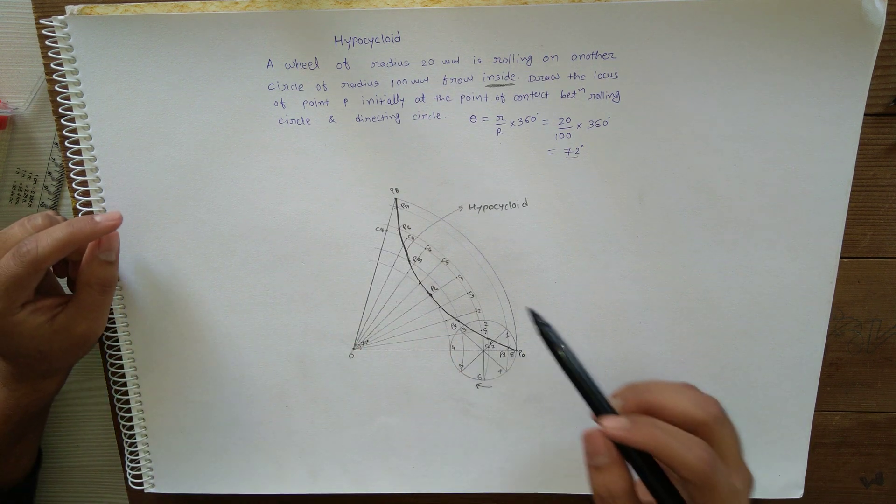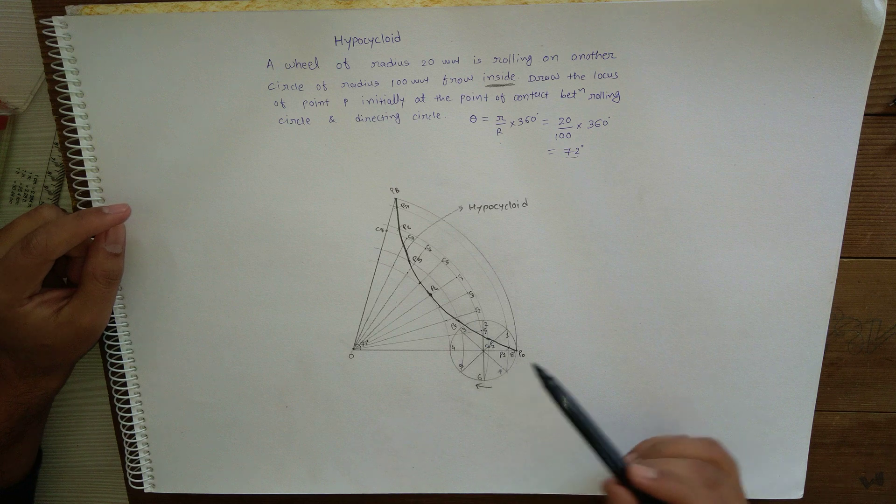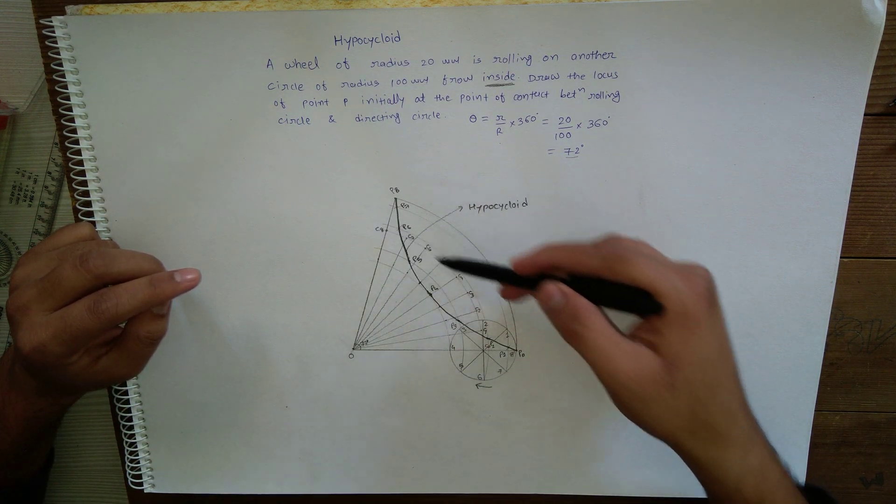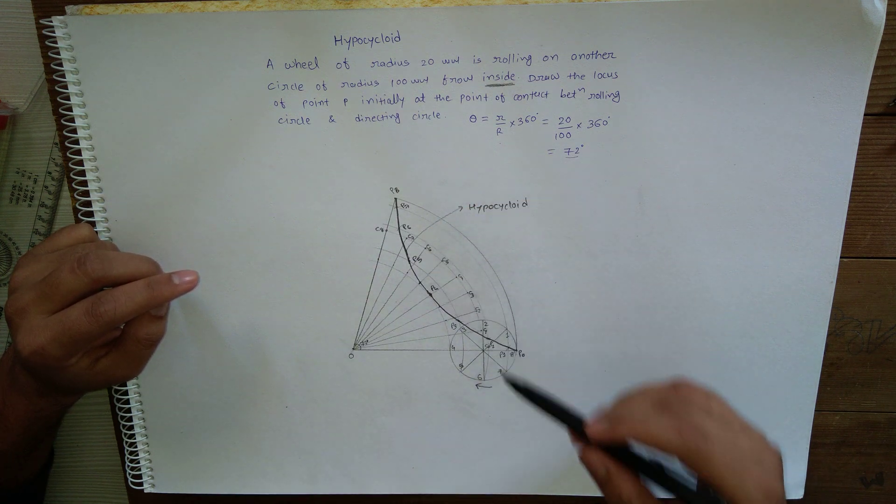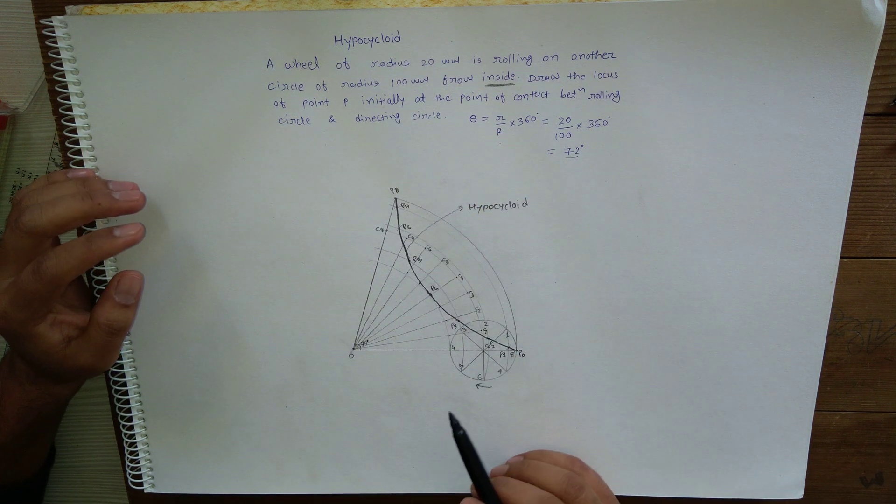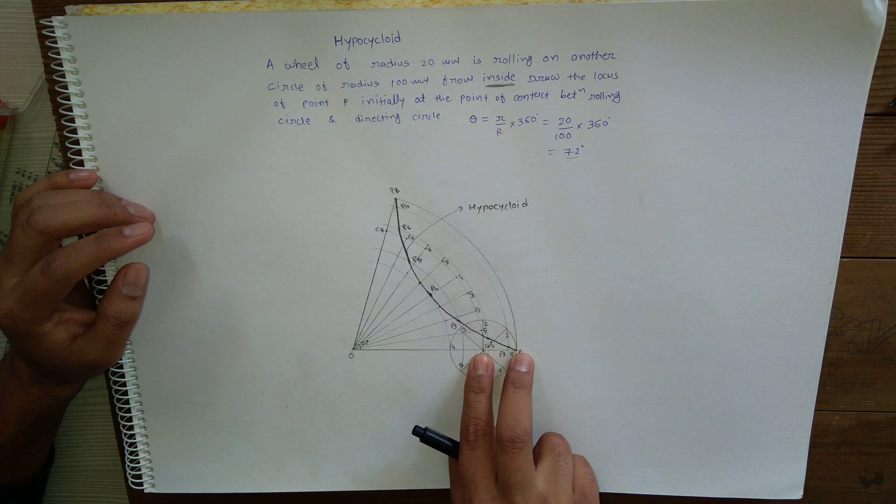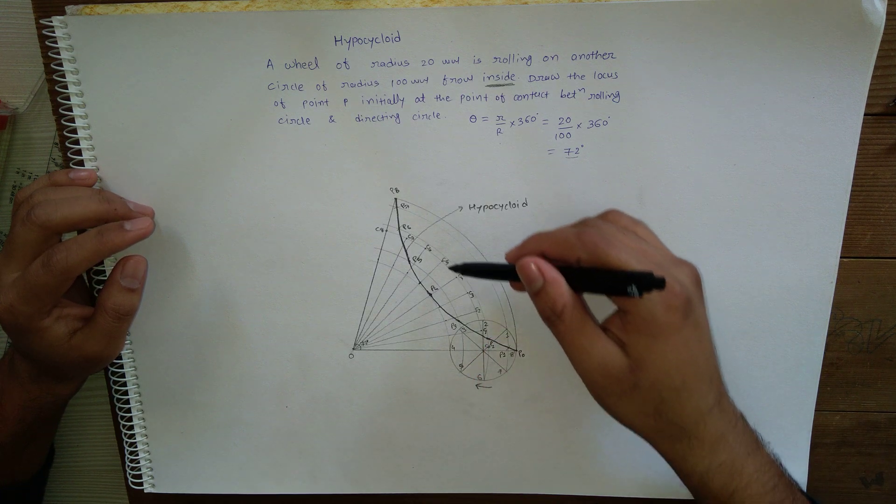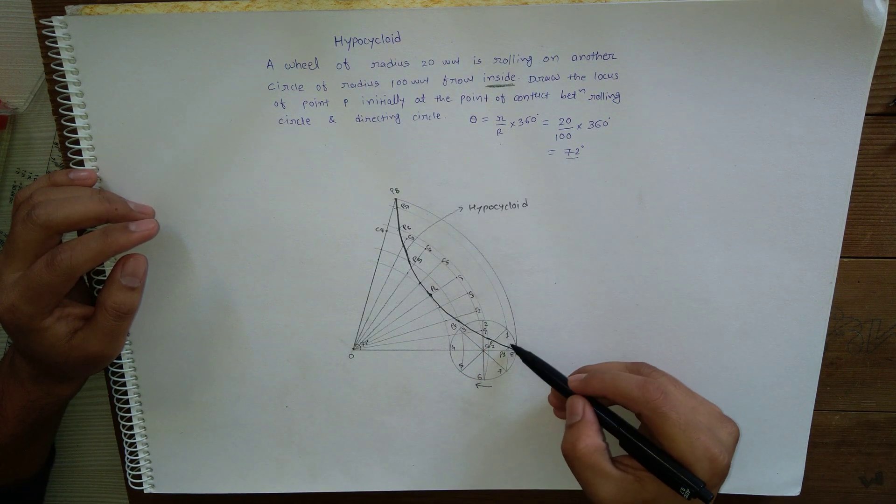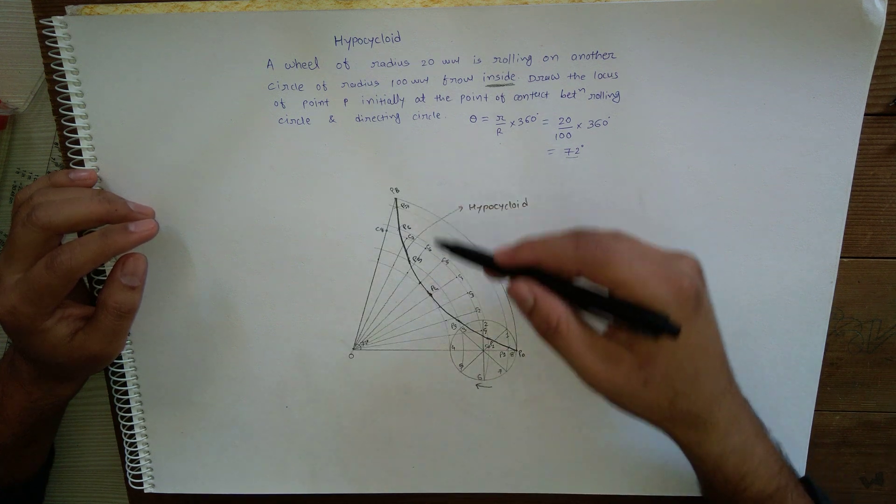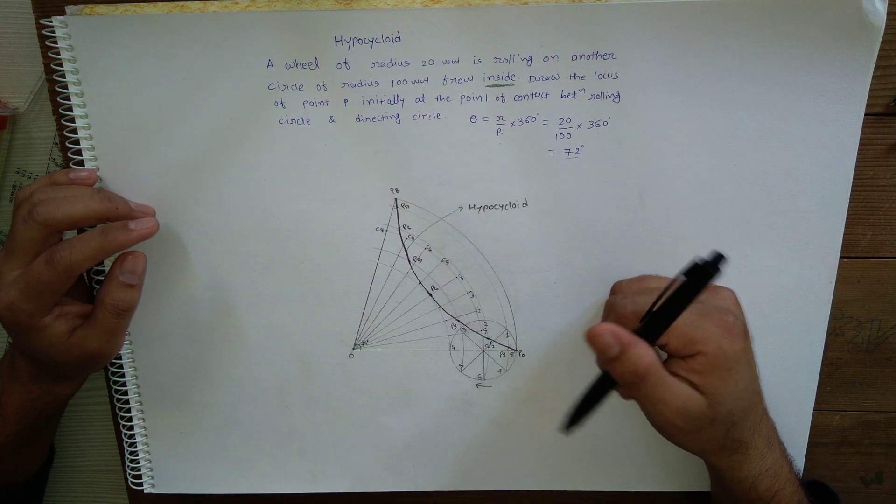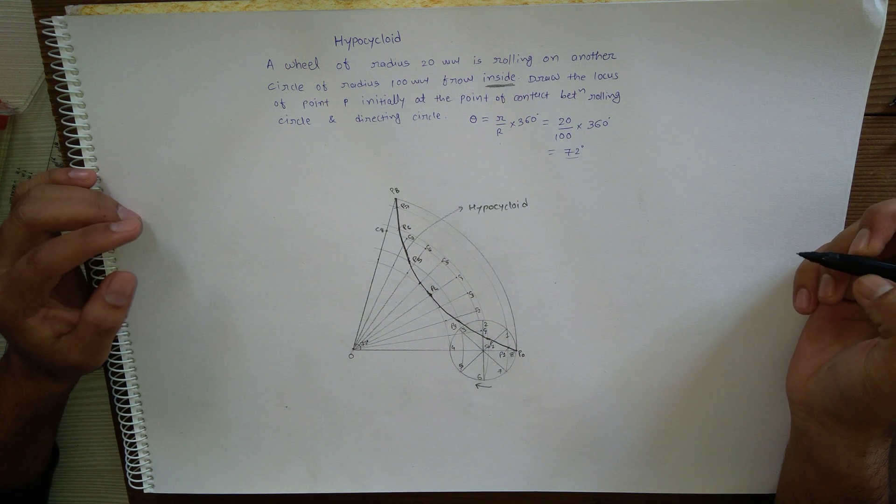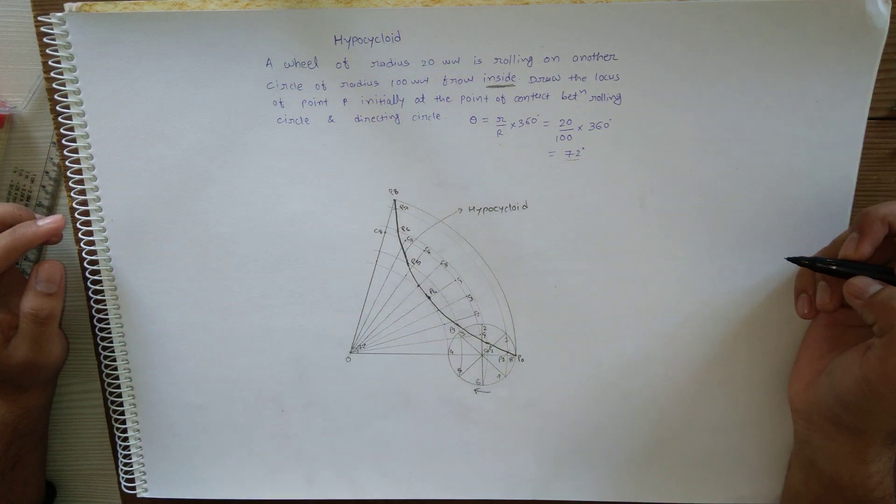Then join or simply mark the different positions of the center C1, C2, C3, C4 up to C8. Then take the radius equal to C0 P0, that is rolling circle radius, and with center C1, C2, C3, C4, cut the arc on the respective arc of 1, 2, 3, and likewise. Join all these points, that is the curve of hypocycloid. Thank you.